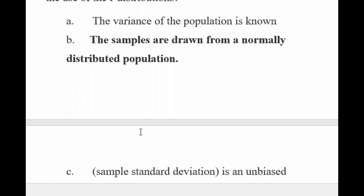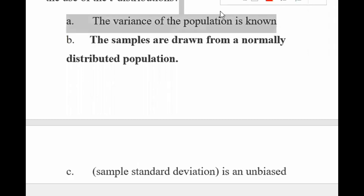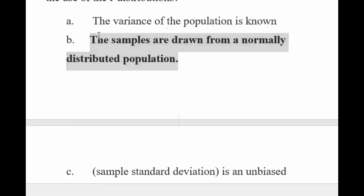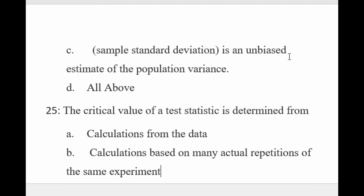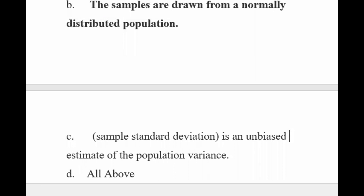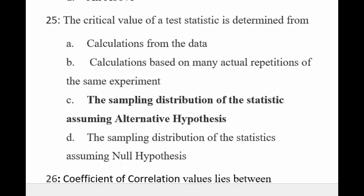Which of the following is an assumption underlying the use of t-distribution? 'The variance of the population is known' — t mein hamare paas variance maloom nahi hota; yeh z mein maloom hota hai, toh yeh theek nahi. 'The samples are drawn from a normally distributed population' — yeh assumption theek hai. 'Standard deviation is an unbiased estimate of the population' — yeh assumption nahi hai. So the correct assumption is that samples are drawn from a normally distributed population.